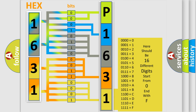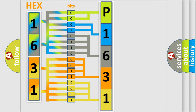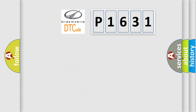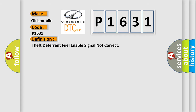We now know in what way the diagnostic tool translates the received information into a more comprehensible format. The number itself does not make sense to us if we cannot assign information about what it actually expresses. So, what does the diagnostic trouble code P1631 interpret specifically for Oldsmobile car manufacturers? The basic definition is: Theft Deterrent Fuel Enable Signal Not Correct.